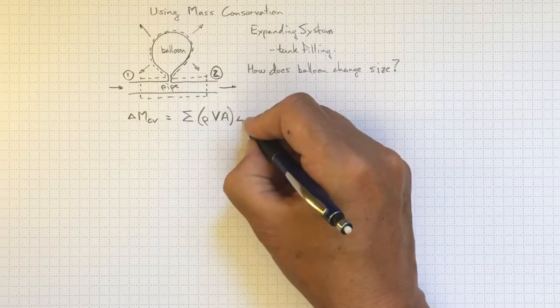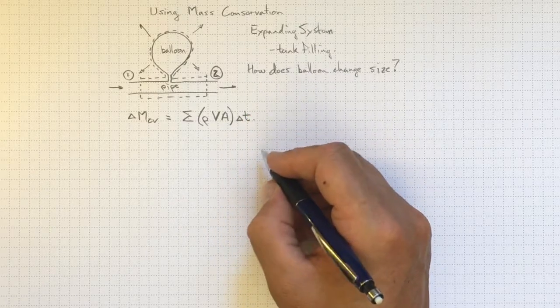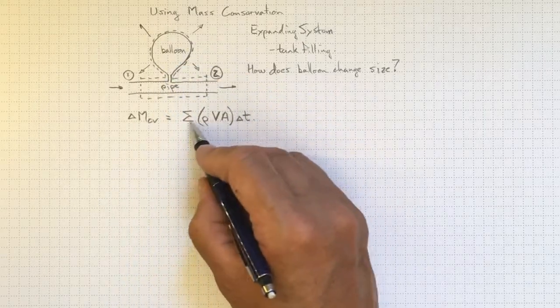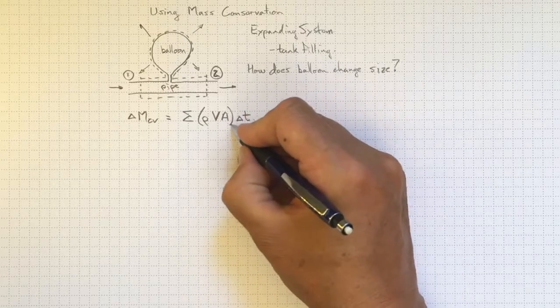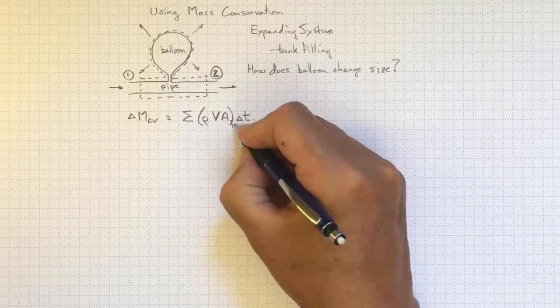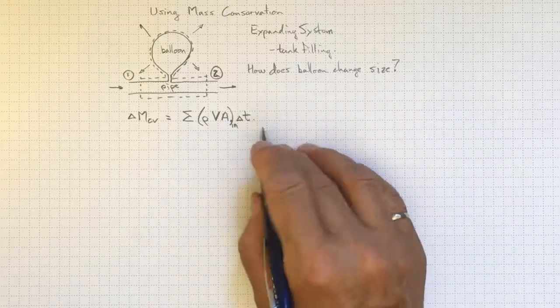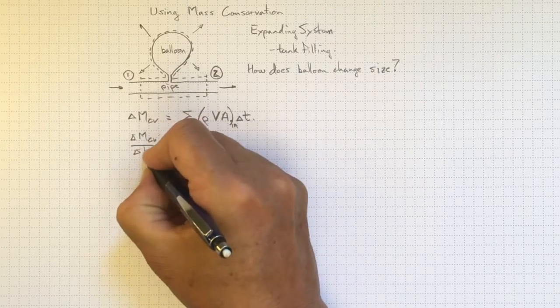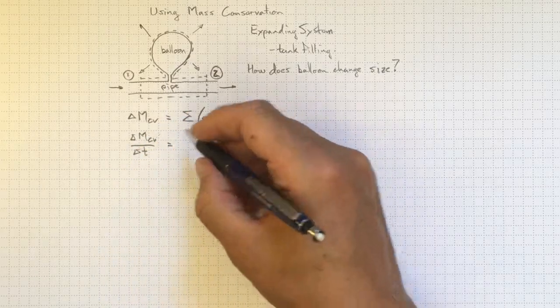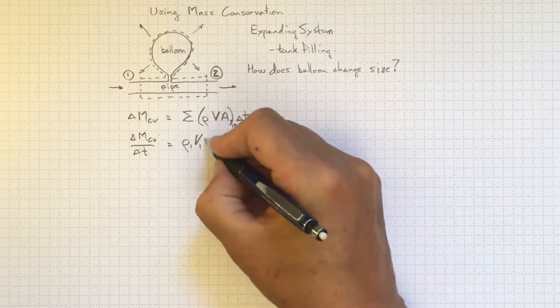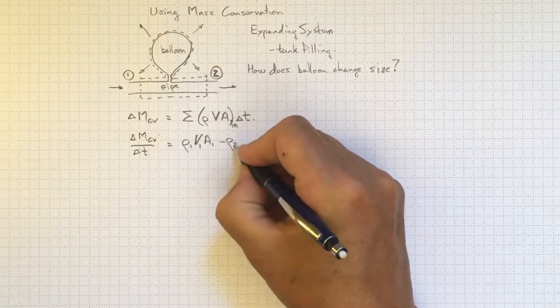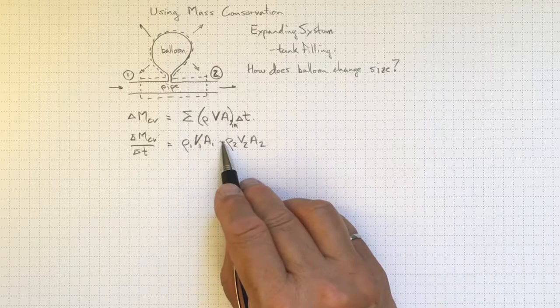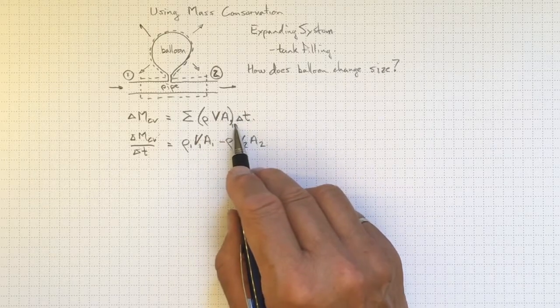times delta T for how long we allowed the flow to continue. So the change in mass in the control volume depends on the difference between flows in and flows out. So this is the sum over all the flows in and it'll just be negative if the flow goes out times the delta T over which we've observed it or delta M_CV over delta T. So these are the inlets and the outlets and this is negative because we're interested in summing over all the flows going in.